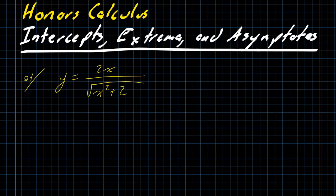We can think about domain — that's always something interesting to worry about, especially when you have a fraction or a radical, and we have both here. Our radical underneath is x squared plus 2. x squared is always going to be non-negative. Add 2 to that and it will always be positive, so we don't have to worry about taking a square root of a negative number or dividing by zero. The domain here is, in fact, all real numbers.